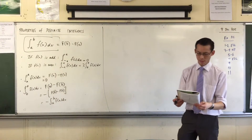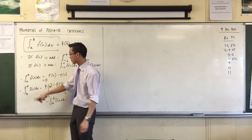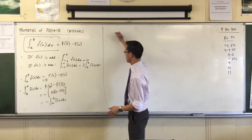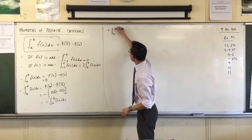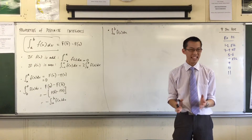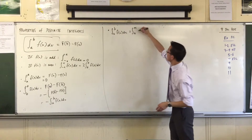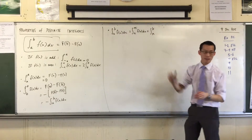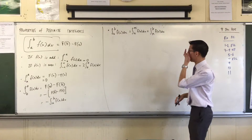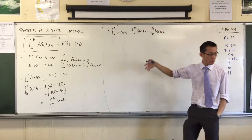The next properties are about dividing up the interval over which we integrate. For property five: if I have an integral from a to b, I can pick any value m between a and b and split it into two chunks — integrating from a to m and then from m to b. This corresponds to composite areas and is a simple idea.